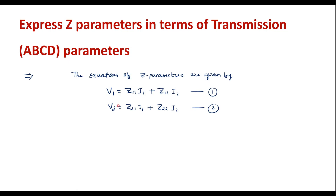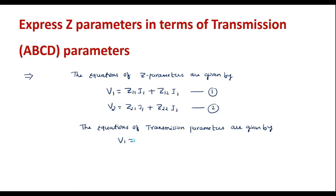Similarly, let me write the equations of transmission parameters, also known as ABCD parameters. These are given by: V1 = A·V2 + B·(−I2) — equation 3 — and I1 = C·V2 + D·(−I2) — equation 4.